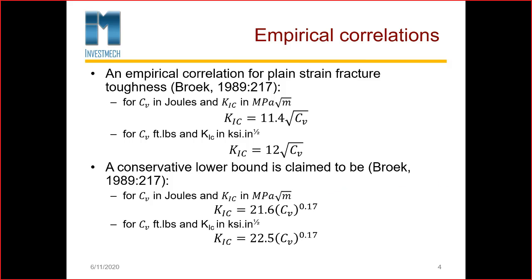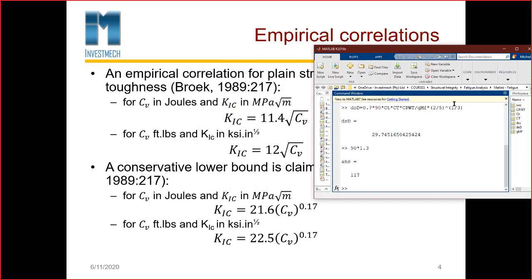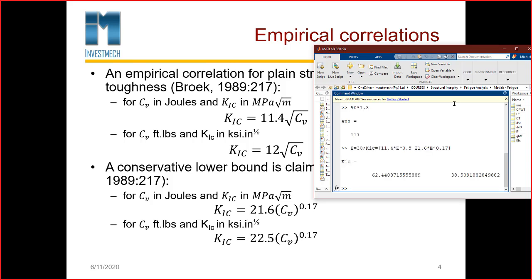For a typical steel, let's say the energy value is 30 joules. Then you can see the K1C value can be equal to 11.4 multiplied by energy divided by 0.5 for the upper value, or it could also be equal to 21.6 times the energy to the power 0.17. Those are the two values that we will get: 62 and 38 MPa square root meter.